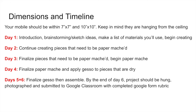Day two: continue creating pieces that need to be papier-mâchéed. Day three: finalize all your pieces and begin papier-mâchéing. Day four: finalize papier-mâché and apply gesso to the pieces that are dry — we'll talk more about gesso when day four comes. Days five and six: finalize gesso and paint, start assembling. At the end of day six, all projects should be hung in the 600s hallway — you'll be installing them yourselves, photographing them, and submitting to Google Classroom with a completed Google Form rubric.